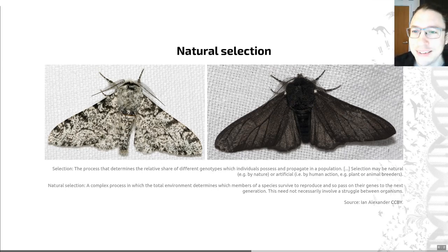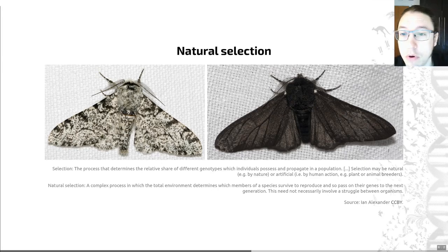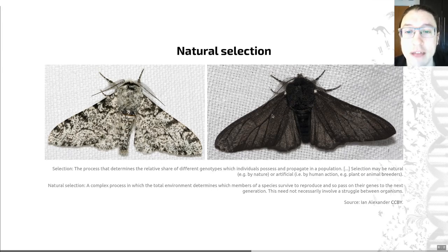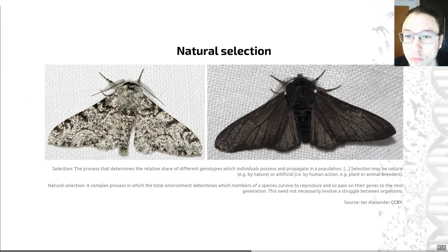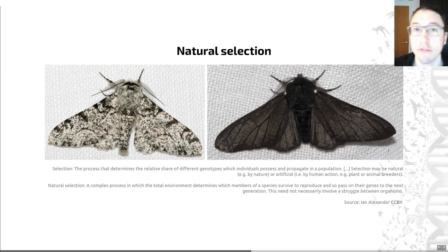A really good classic example of this is the peppered moth, Biston betularia — though the Latin name doesn't really matter. We have two basic forms of this moth: the black and white peppered, or light form, that you can see on the left-hand image here, and the carbonaria, or dark melanistic form, that you can see on the right-hand side here. We know that this dark form results from a single mutation within the genome of this organism. So we've got these two different forms of this moth — that is an example of variation within a population.